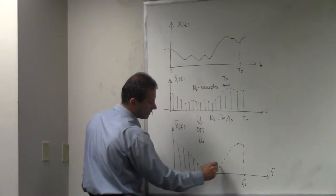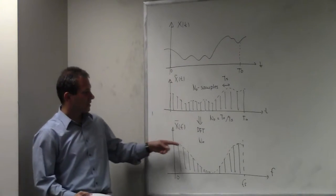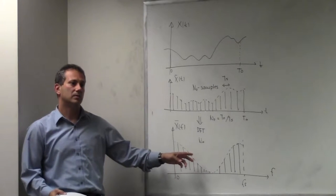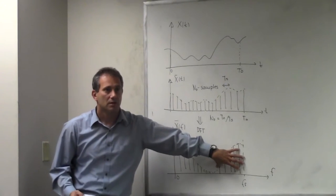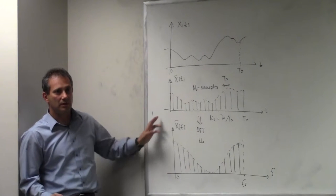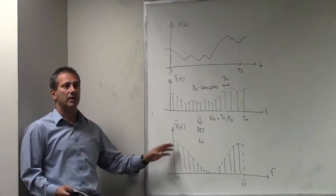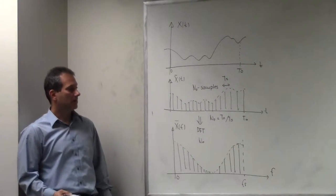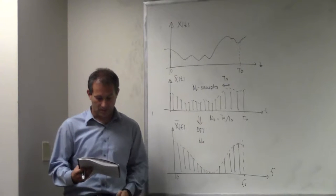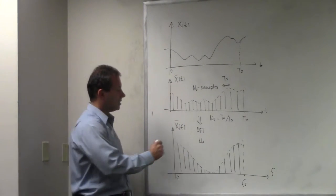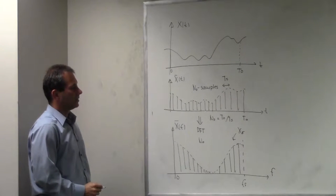If you do this in MATLAB and plot the magnitude of your FFT spectrum, you get this kind of picture. There's a function called FFT shift that takes the spectrum and centers it around the origin, giving you the baseband version of the spectrum. That one has to be symmetric — it has to be even. There are N samples in the time domain and N samples in the frequency domain.